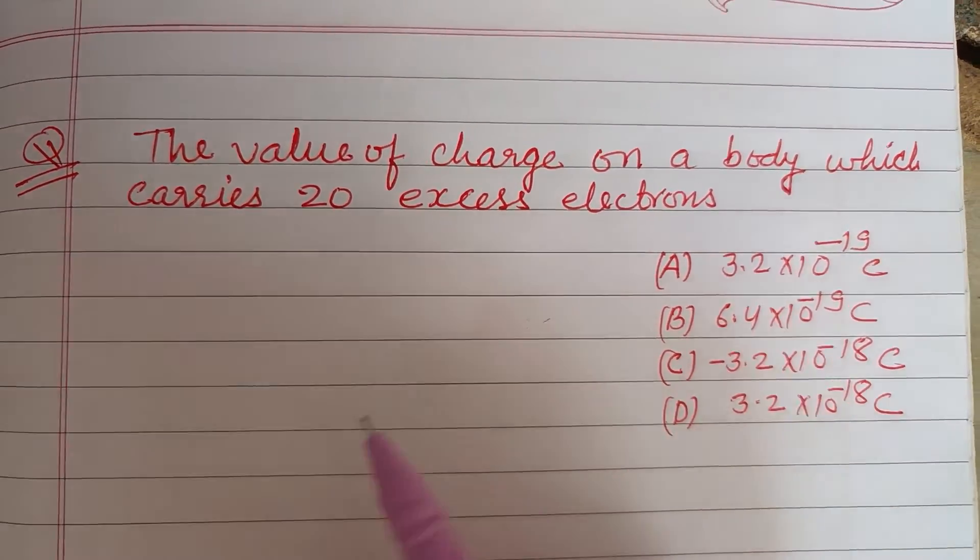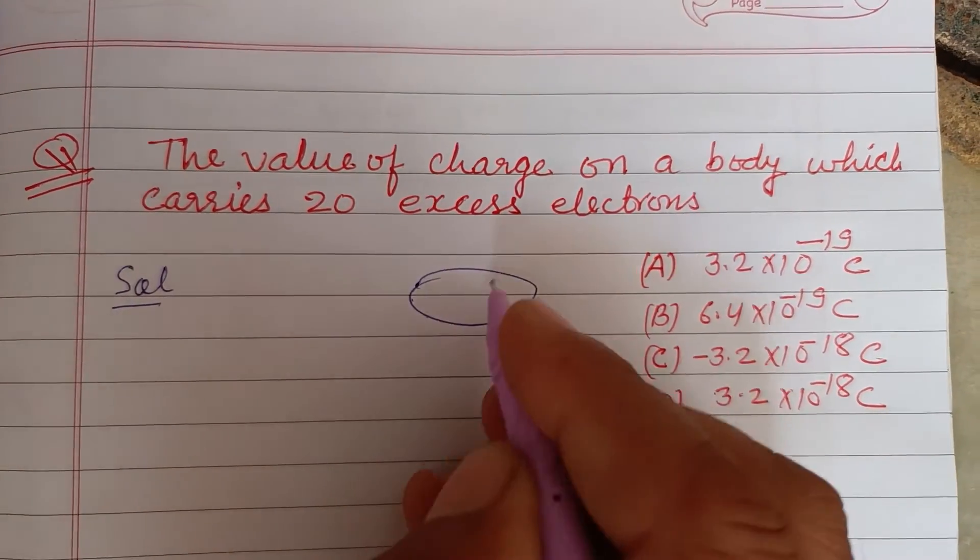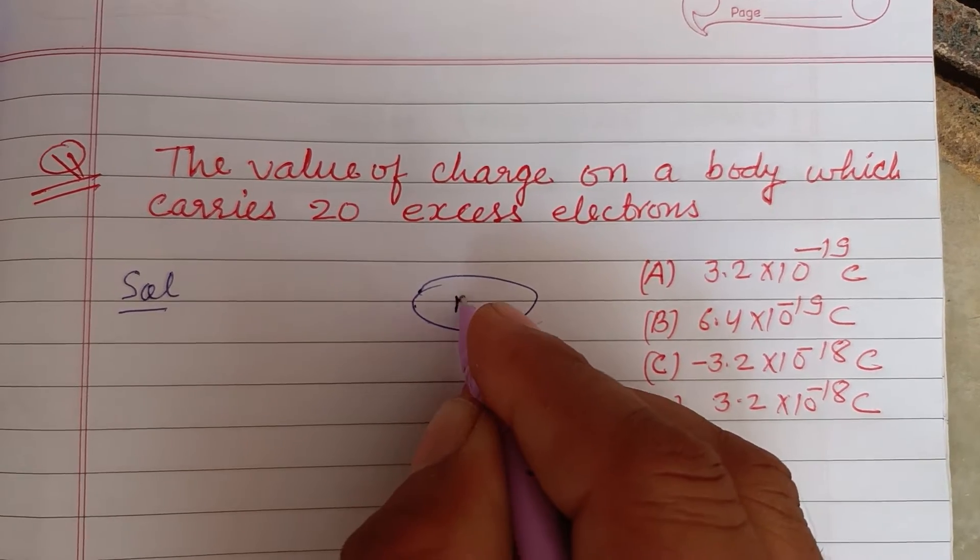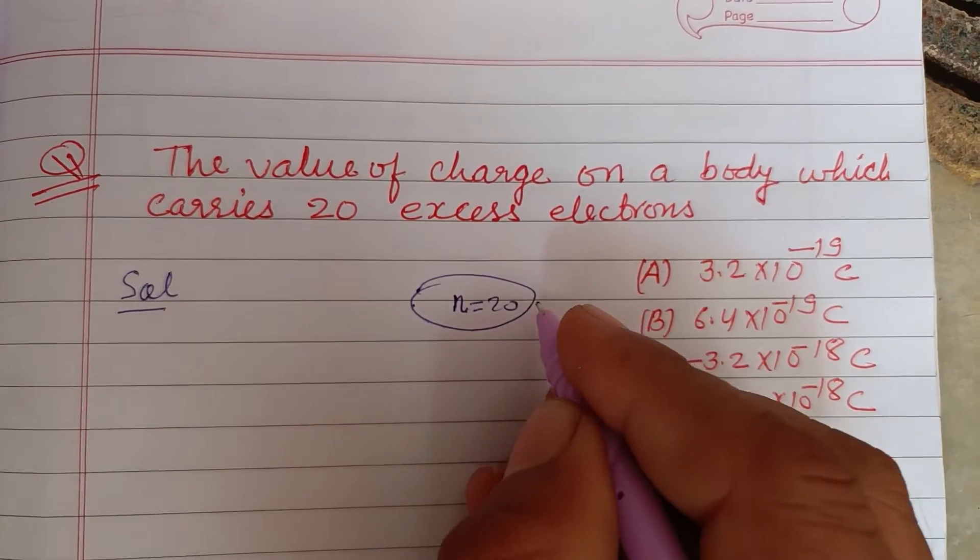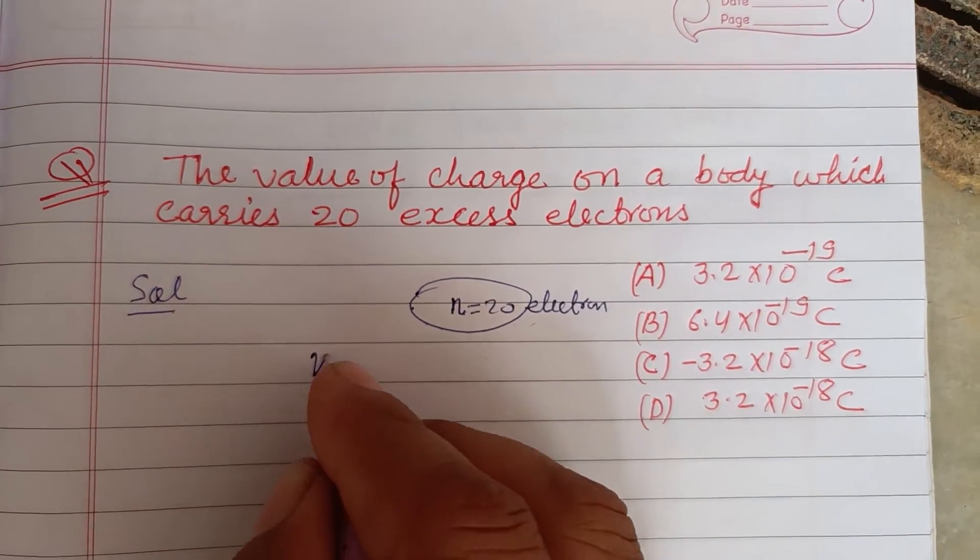excess electrons. So students, here is a body which contains a number of electrons, 20 excess electrons, so n is